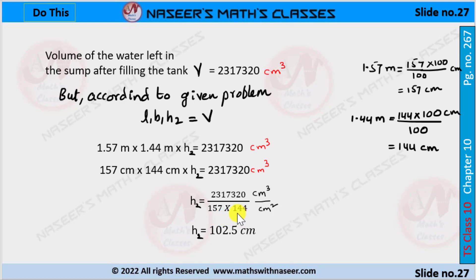After cancellation, we get H2 = 102.5 centimeters. This is the height of the water left in the sump.